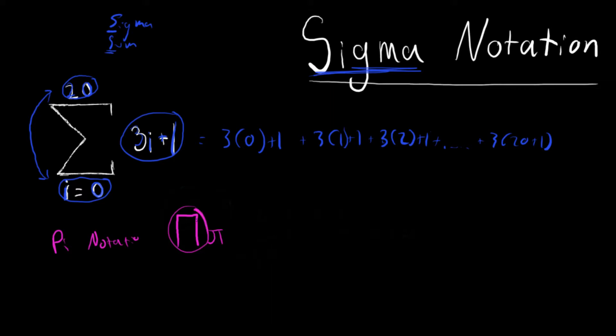Now, pi notation is exactly the same as sigma notation. But instead of summing up here, it's product. So pi is product notation.